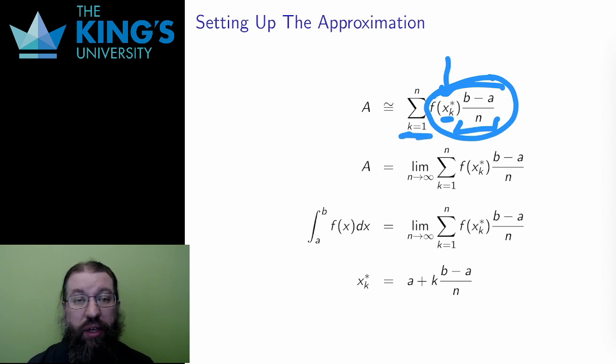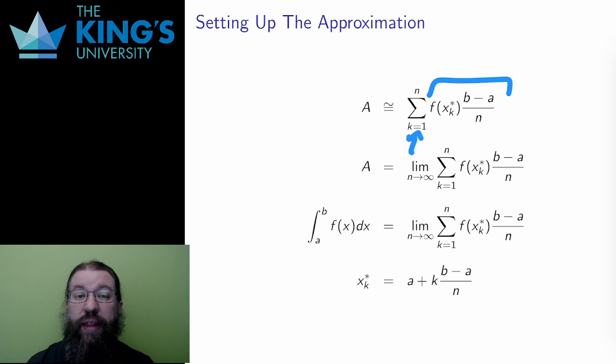This is where I use sigma notation. I have a bunch of rectangles indexed with the index k from 1 to n, and that's the setup for a sigma notation, so I use it. The area is approximately the sum of n small rectangles, each with width b minus a over n, and height the function value at some xk star in each little piece of the domain. That's the approximation process.